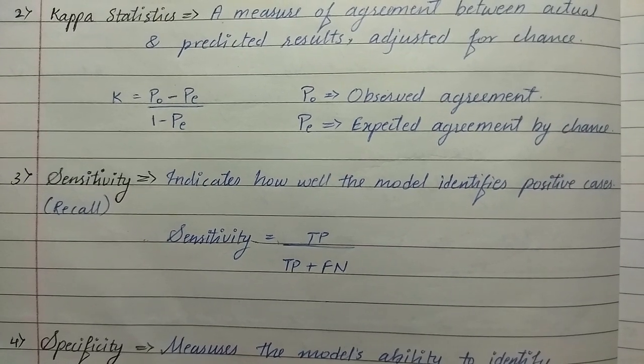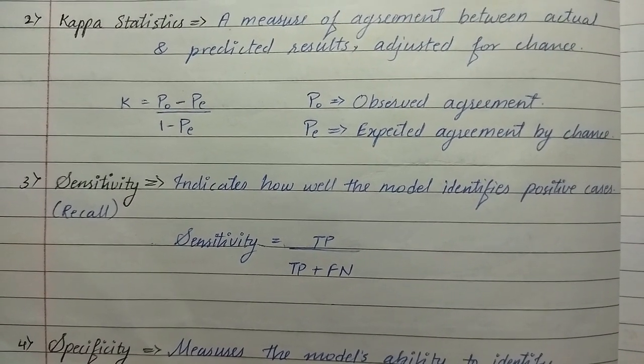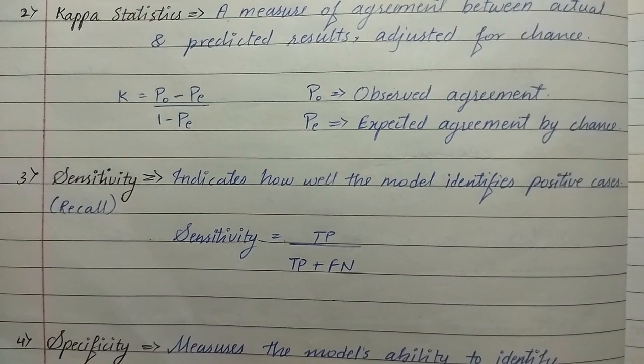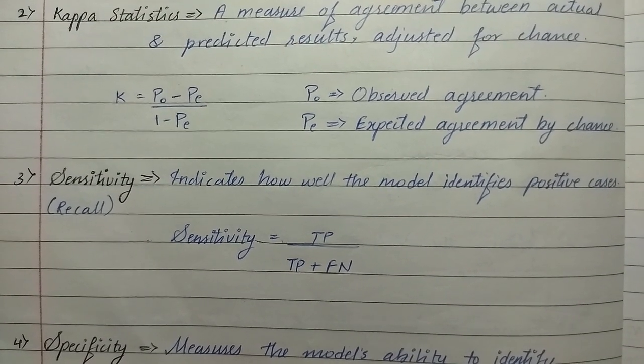The third matrix is sensitivity, which indicates how well the model identifies positive cases. Sensitivity can also be called recall. The formula for sensitivity is true positive upon true positive plus false negative.